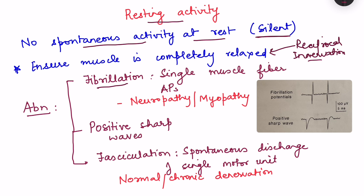Sometimes there can be abnormal electrical activity recorded in the resting state. These are: fibrillation potentials, positive sharp waves, and fasciculations. Fibrillation potentials are action potentials of a single muscle fiber — in the recording there will be a silent baseline with spontaneous single muscle fiber action potentials appearing in between. These fibrillation potentials can occur in neuropathy as well as in myopathy.